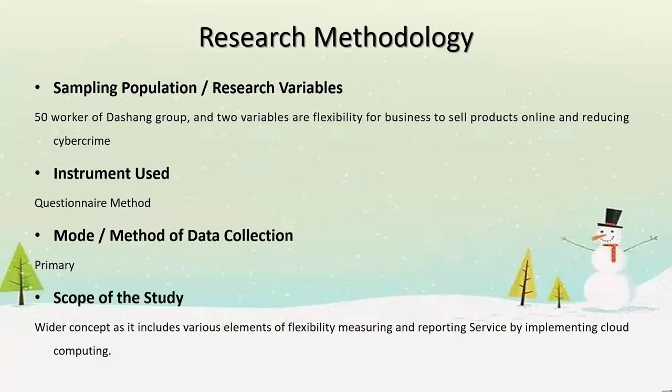About research methodology: the sampling population had 50 workers of Dachshund Group, and the two variables are flexibility for business to sell products online and reducing cybercrime. We used the questionnaire method, and this is the primary mode.